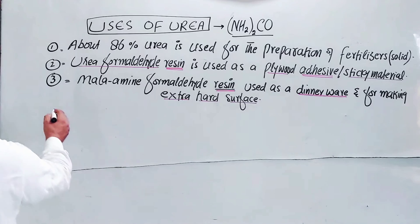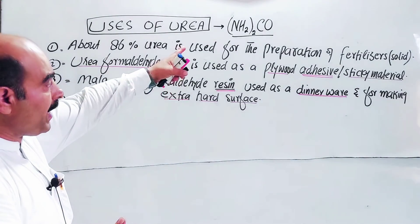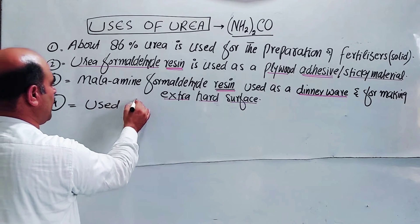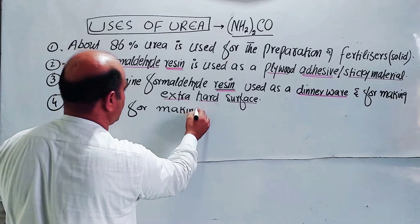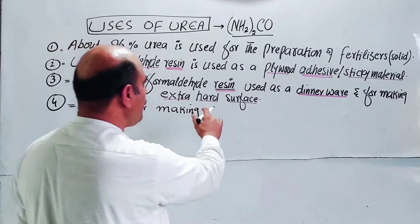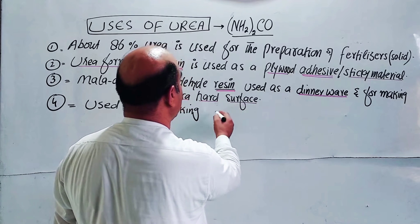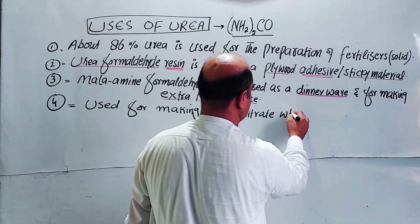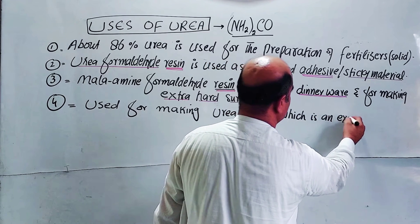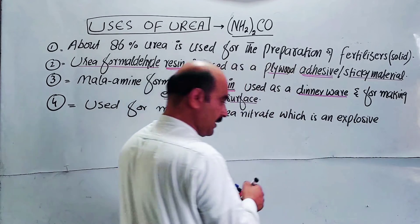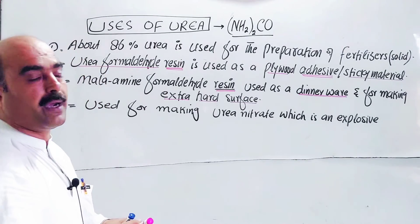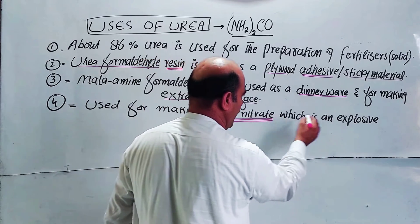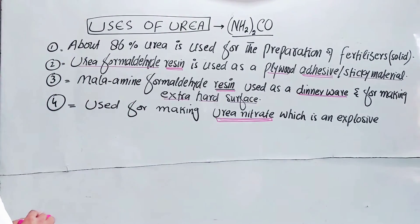Use number 4: urea is used for making urea nitrate. Urea nitrate is an explosive material. It is mostly used for blasting — da damaqo ki ziyad tar blasting ki da istimali ghi. Urea is used to form urea nitrate, which is used as an explosive material.